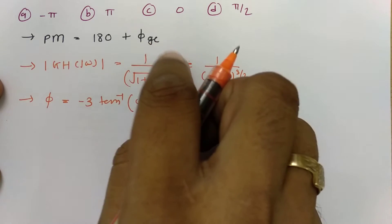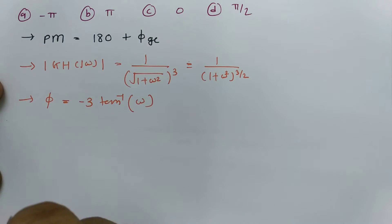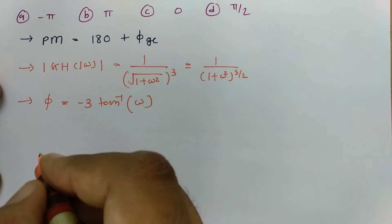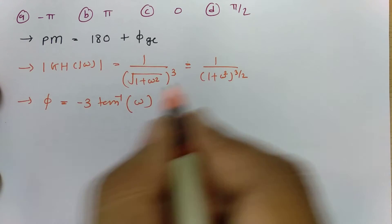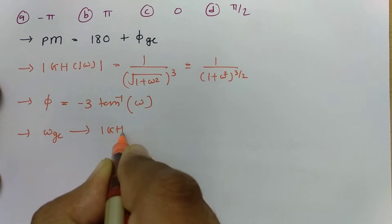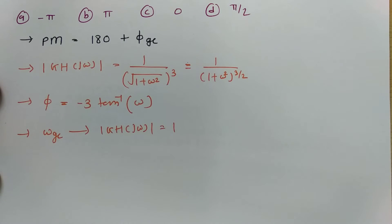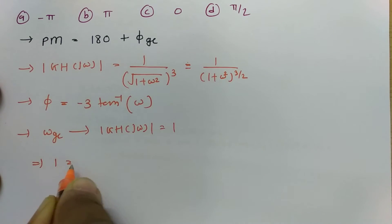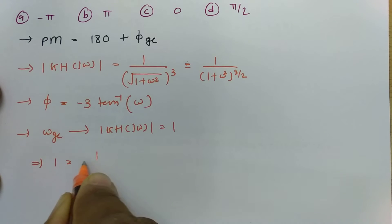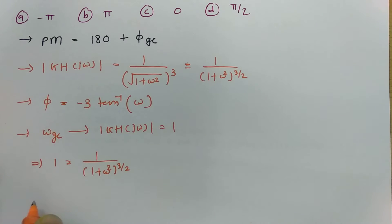To find the phase at the gain crossover frequency, we first need to calculate the gain crossover frequency itself. The gain crossover frequency occurs when the magnitude equals unity. So we set the magnitude equal to 1: 1 divided by (1 + ω²) raised to 3/2 equals 1. That frequency will be the gain crossover frequency.